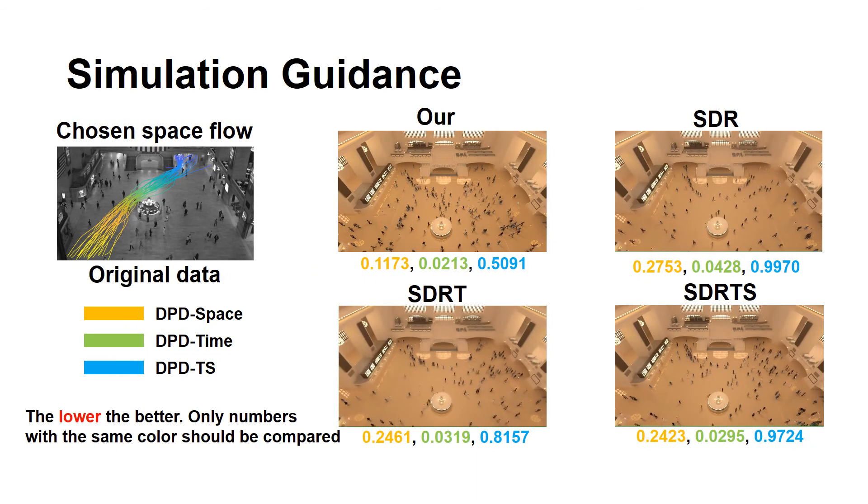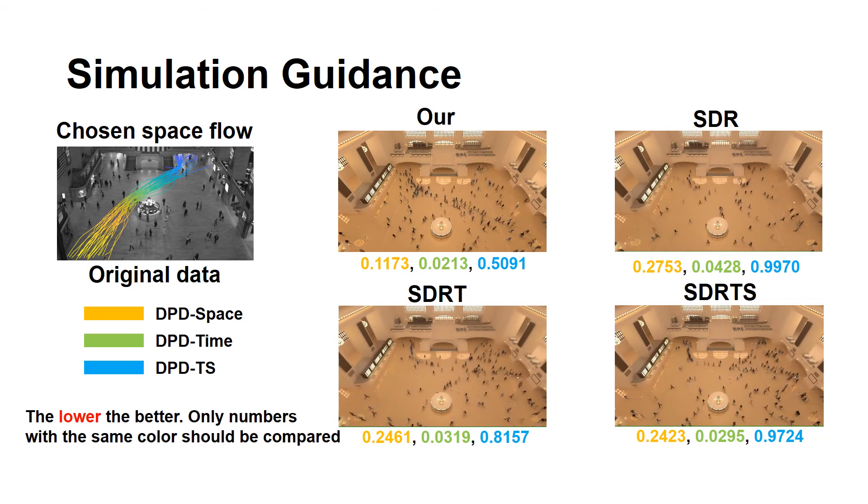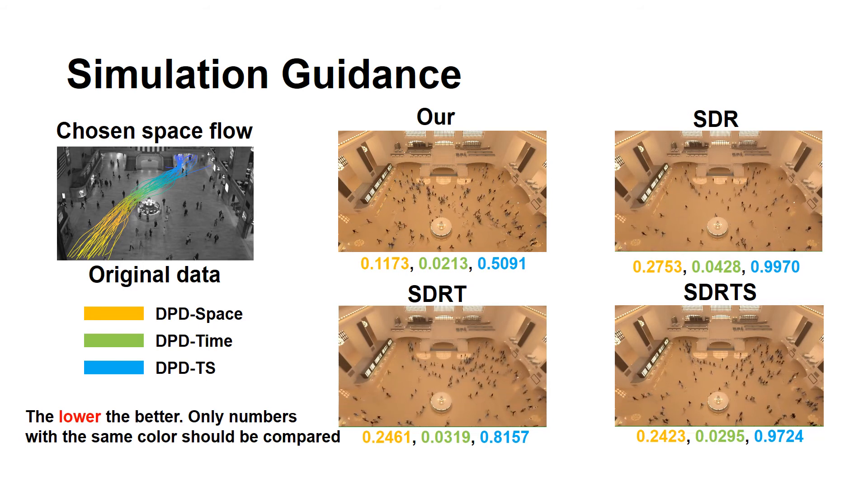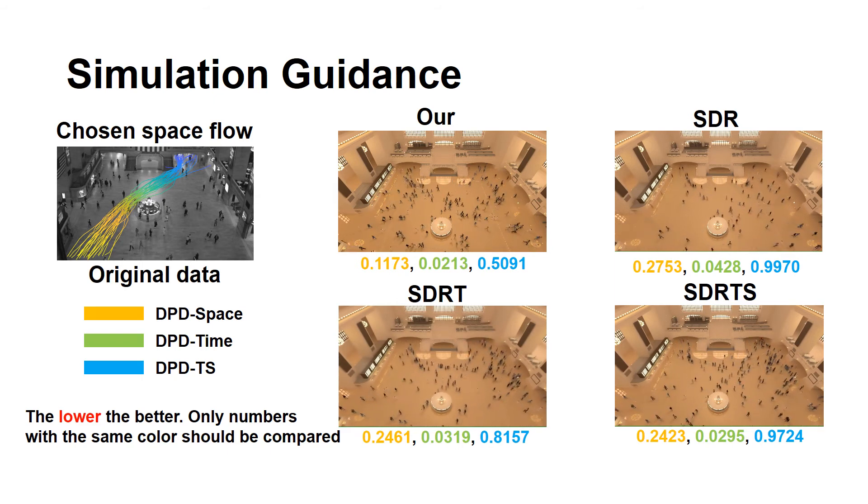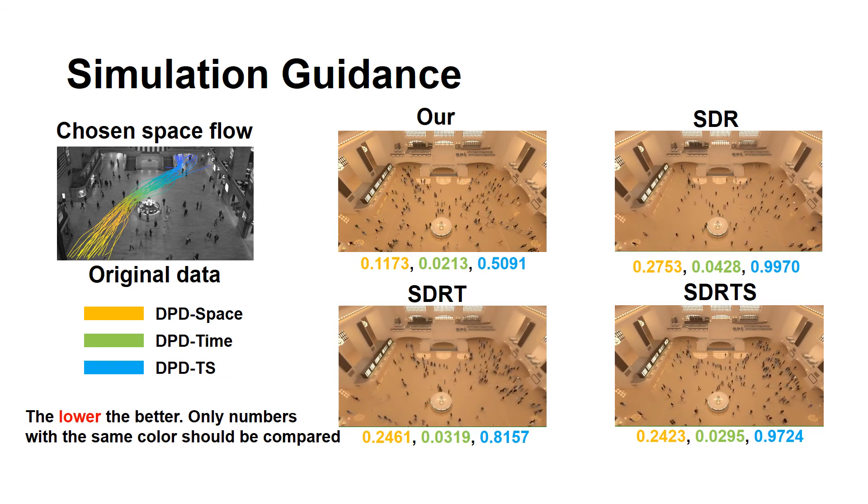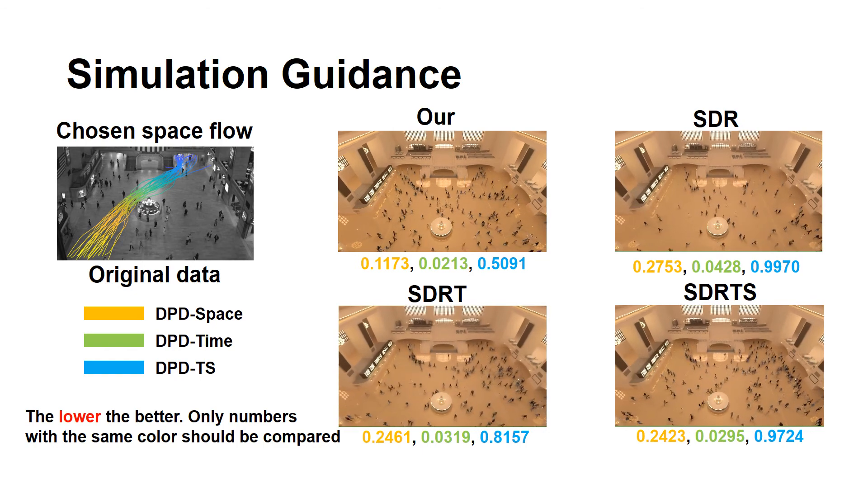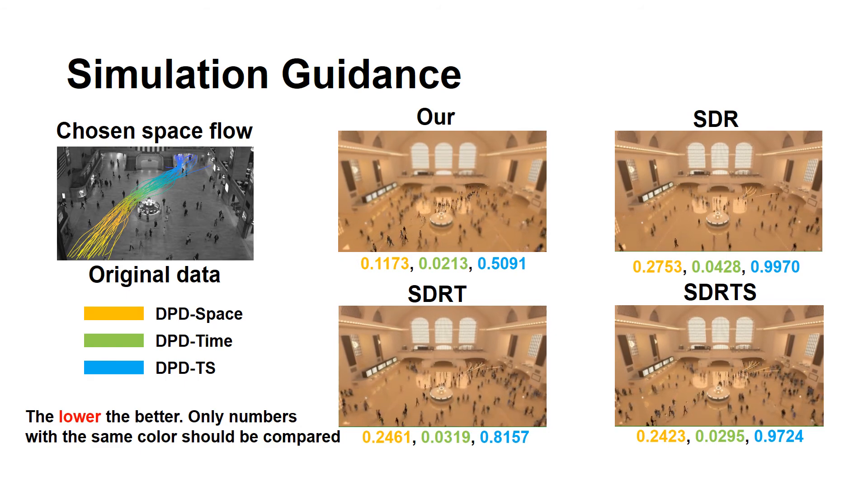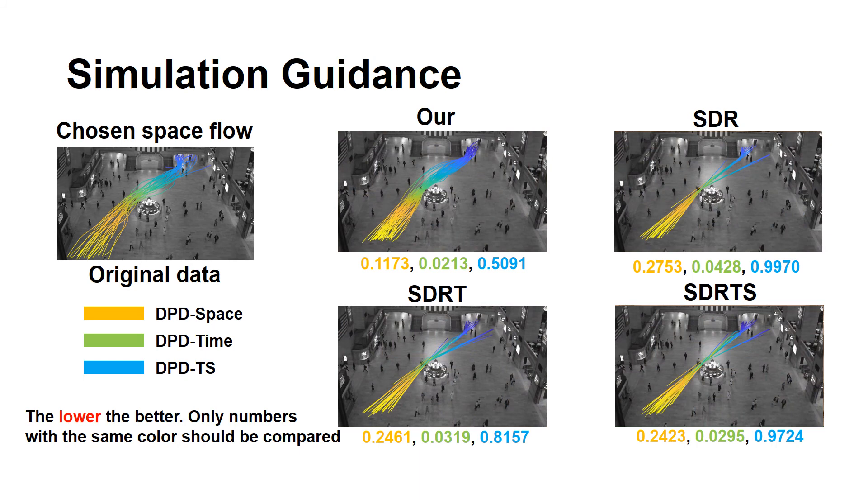Our method provides a holistic and fully automated guidance for simulation. The details of how to guide simulations can be found in the paper. Here we use the same space flow as an example to compare our guided simulation with other manually set simulations. Since we focus on one space flow, we use the same DPD metrics for comparison. Qualitatively, our method generates more realistic flow as it captures the within flow randomness. Other simulations tend to generate narrower flows because when there is no guiding trajectories, straight lines are simulated.